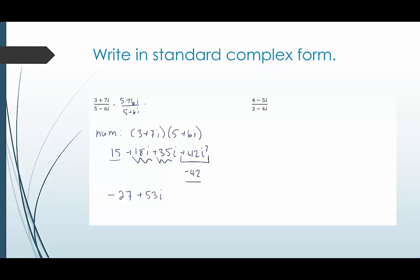Okay so now we have our numerator. We have negative 27 plus 53i. What about the denominator? Well the denominator we would end up having the first term squared 25 plus the real part of the second term squared 36. That's going to give us 61. So this would all be divided by 61.